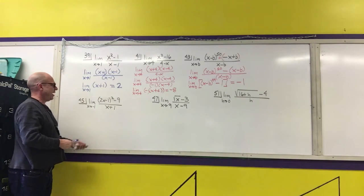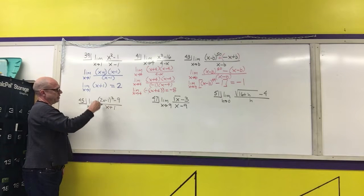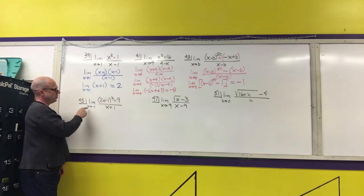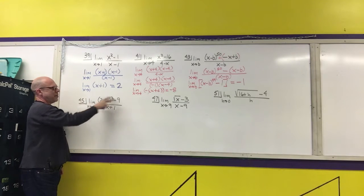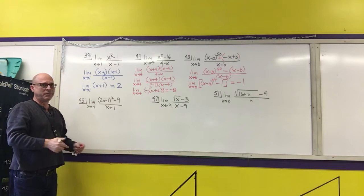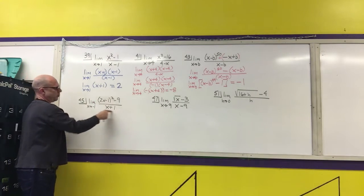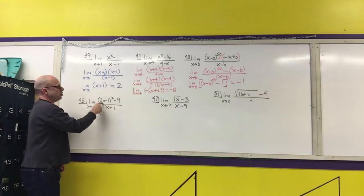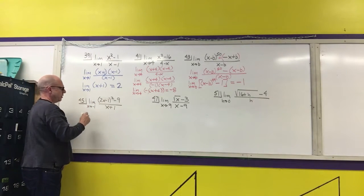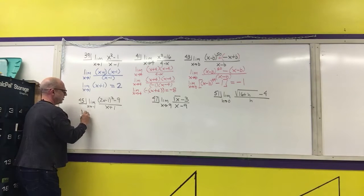Question number 45. Instead of factoring to try my solution as x approaches negative 1, I'm actually going to distribute and simplify then factor to see if I can get rid of the x plus 1 in the denominator. 2x minus 1 squared. So let me write the limit part first. Limit as x approaches negative 1.